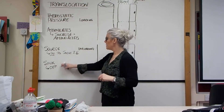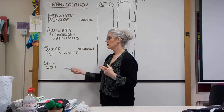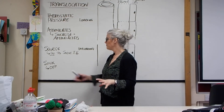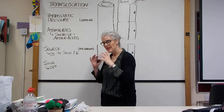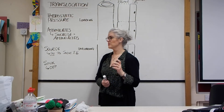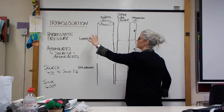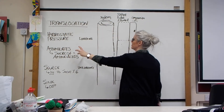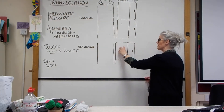A sink is anything that moves sucrose out of the sieve tube element. That could be somewhere actively respiring — new shoots or new roots at the beginning of the growth season — or it could be the potato tuber at the end of summer, laying down stores by moving sucrose into the potato and storing it as starch. Loading happens at a source, moving sucrose into the tube element; unloading happens at a sink, moving sucrose out.